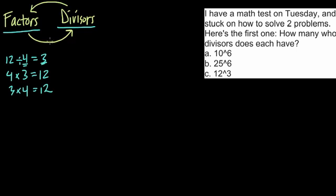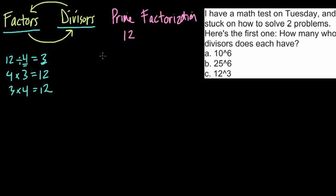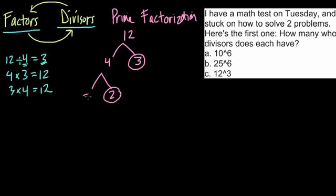My technique for breaking this down is to use prime factorization. Prime factorization might have been a process you just went through and completed, not having time to reflect on what's really happening. But let's take a look at a simple number like 12. Prime factorization is where you pick any two factors — it doesn't matter what two — and write them out. Your goal is to factor this number out into its prime factors. When you reach a prime factor, I usually circle it. Keep going until you reach all the prime factors.